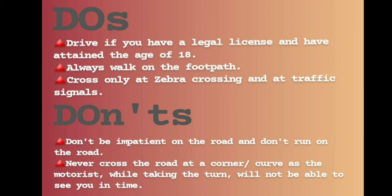Don'ts: Don't be impatient on the road and don't run on the road. Everyone wants to reach their destination on time, but avoid overtaking and over-speeding. Never cross the road at a corner or curve, as a motorist taking a turn will not be able to see you in time. Pedestrians should stay on the footpath or cross only at zebra crossings. Don't cross from sharp edges or curves because bikers at speed may be unable to brake in time.